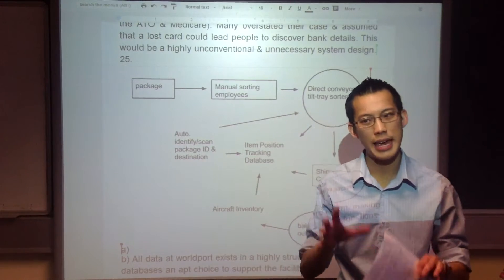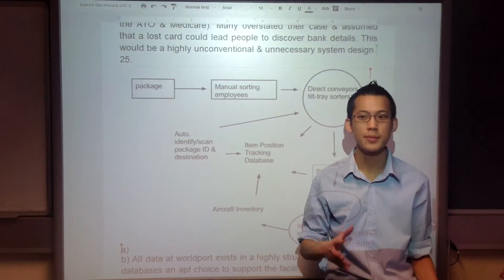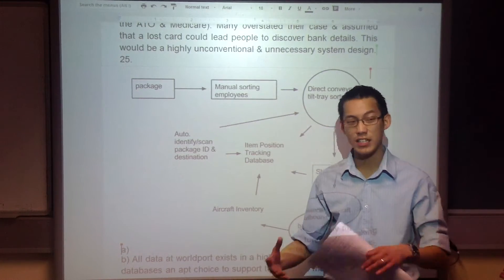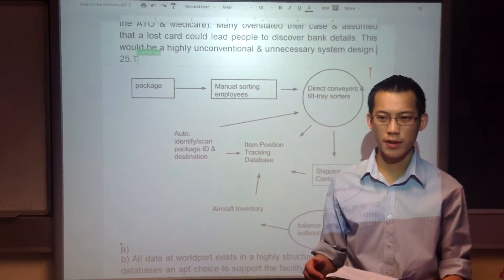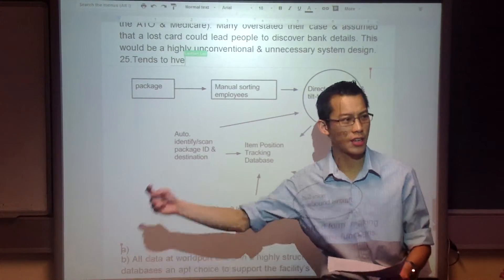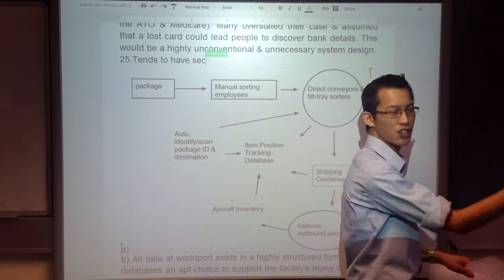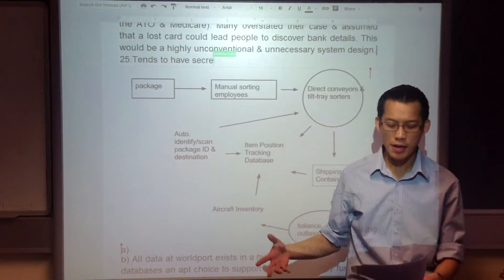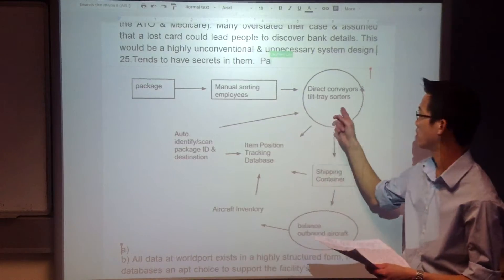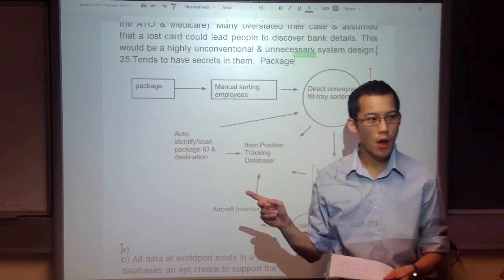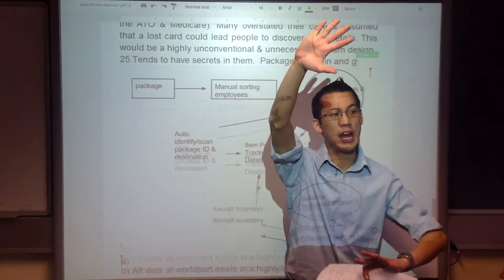Data flow diagrams tend to have a sequence to them. There tends to be some kind of order. And here there was a very definite order: packages come in, stuff happens, and then packages go out. So think about what are the processes — those are the circles — what are the processes that happen from start to finish?